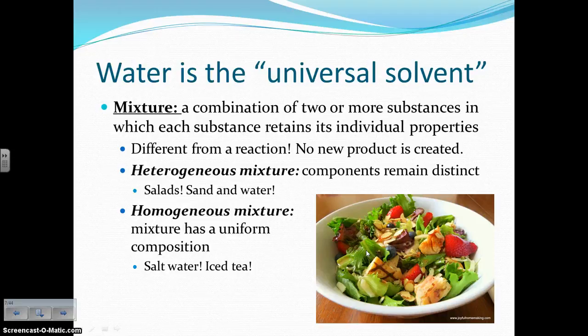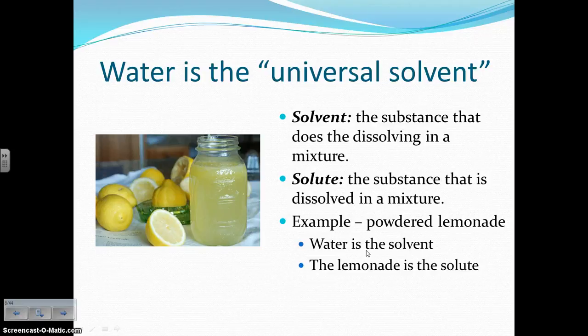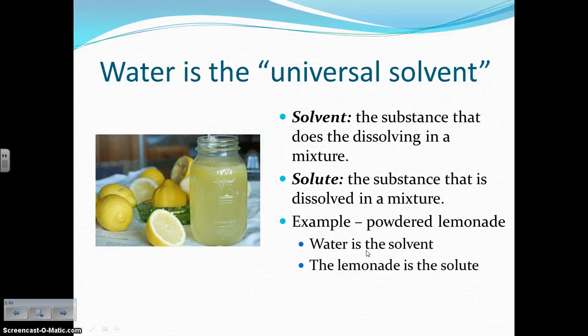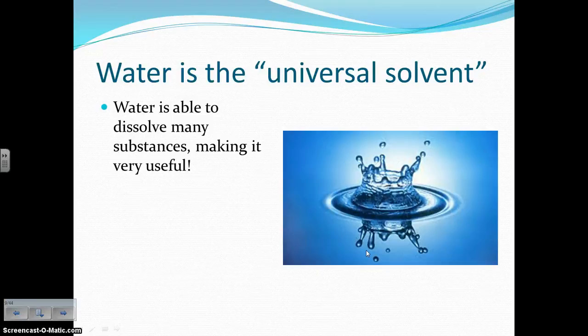Water is the universal solvent, so what is a solvent? A solvent is the item in a mixture that is doing the dissolving. In most mixtures where you have water, water is going to be the item doing the dissolving. The solute is the substance that is being dissolved. For example, if you're making powdered lemonade, you pour the powder into the water and mix it. The water is the solvent doing the dissolving, and the powdered lemonade is the solute — the stuff getting dissolved. Water being the universal solvent simply means water is able to dissolve a great variety of substances, which makes it very useful.